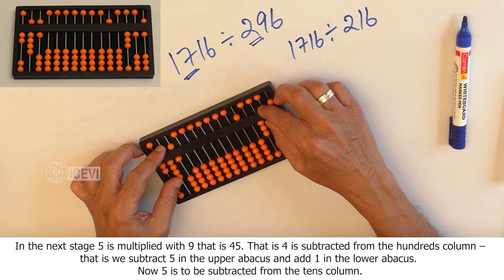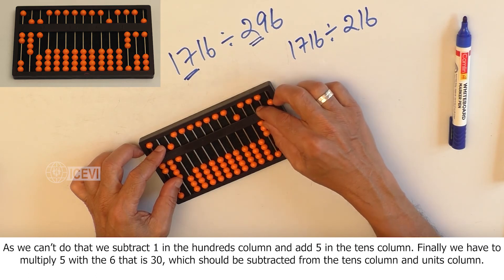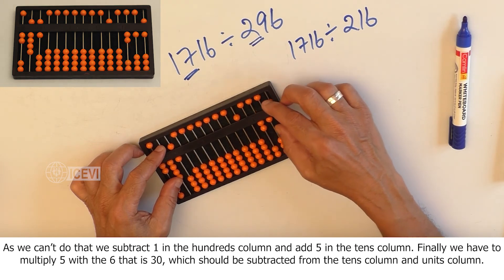Now, 5 is to be subtracted from the tens column. As we can't do that, we subtract 1 in the hundreds column and add 5 in the tens column.